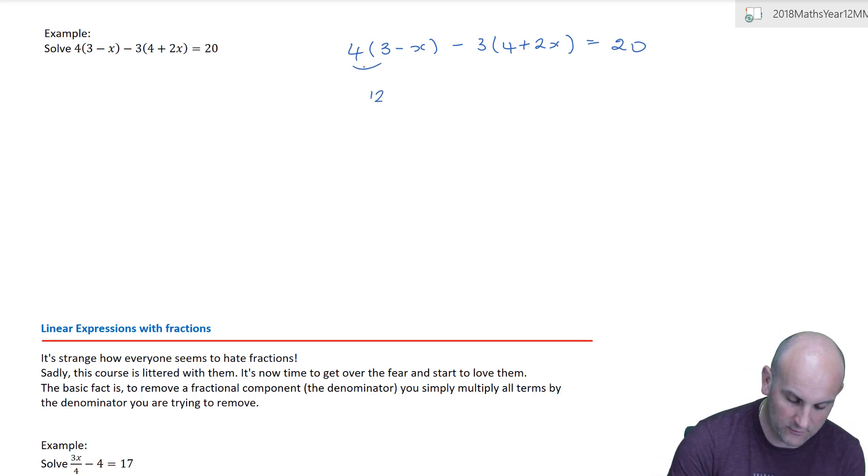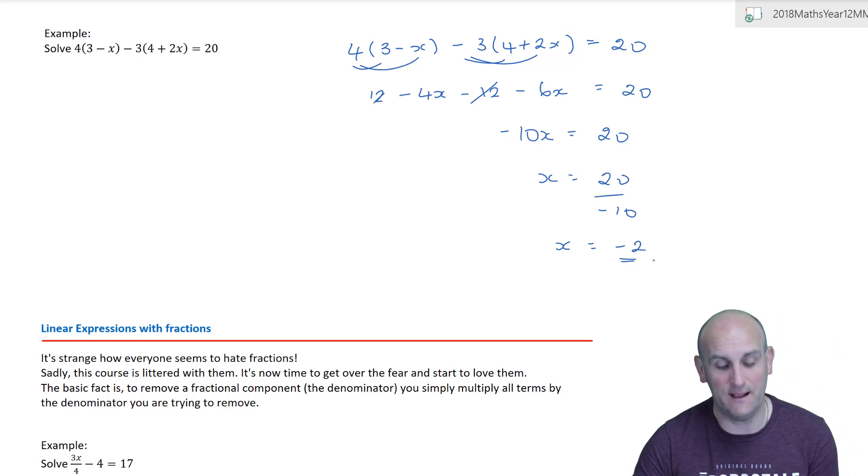4 times 3 is 12. 4 times minus x is minus 4x. Minus 3 times 4 is minus 12. And minus 3 times 2x is minus 6x. Collect some like terms. Well, we know that 12 minus 12 cancels. Minus 4x minus 6x is minus 10x is equal to 20. Divide both sides by negative 10, and x becomes equal to minus 2. Nice and easy.